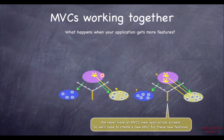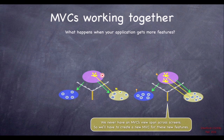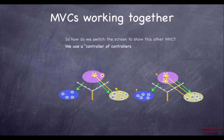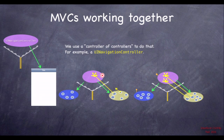You cannot have a single MVC supporting a view that's on multiple screens. The MVC controls one screen full or less at a time. You wouldn't have an MVC controlling multiple pages of data — we divide that up into separate MVCs. So we create a new MVC; it might be quite complicated. How do we switch the screen to show the new MVC when we hit a graph button? We want to use a controller of controllers. The one we're going to talk about first, because it's the simplest to imagine, is a navigation controller.